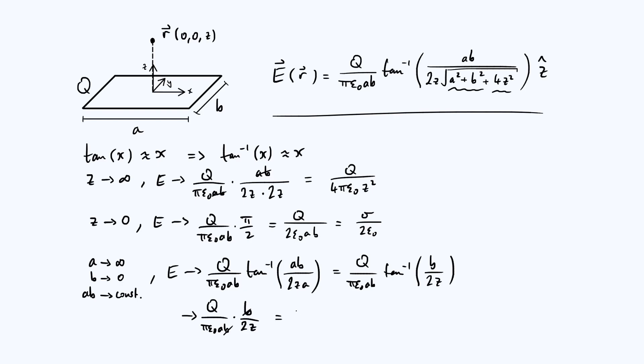And so what you're going to get is q over 2 pi epsilon 0 a z. So in the same way that for the z going towards 0 case, we defined q over a b to be sigma, we could do something similar with q over a, just the q divided by a. That is charge per unit length, in other words, linear charge density, which is often denoted by lambda. So we could write this as lambda over 2 pi epsilon 0 z.